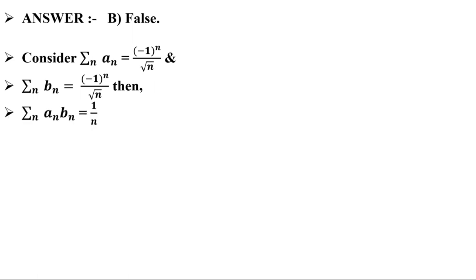Now, if we multiply them, then an into bn will be equals to 1 upon n. And we clearly know that the series 1 upon n is divergent. Hence, the given statement is false.